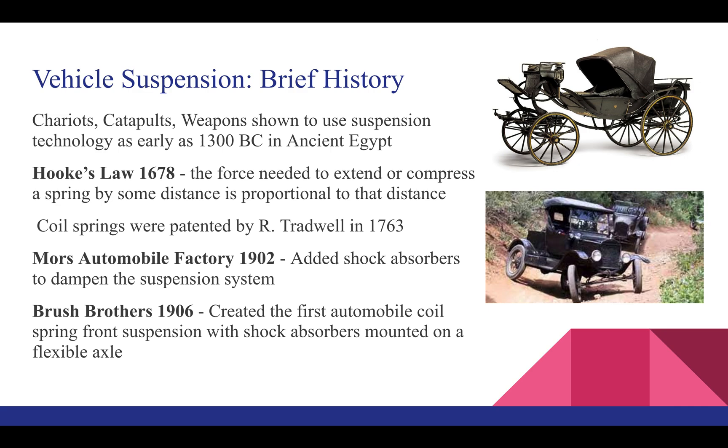We have a few other examples such as the Mors Automobile Factory in 1902. They added the first shock absorber in the suspension system. Basically what this does is it provides damping to the system through the use of a viscous fluid or a piston cylinder to help make rough patches die out when you're hitting a bump. The Brush Brothers in 1906 created the first coil spring front suspension with the shock absorbers mounted. They basically took the two concepts, put them together, and this is really where we've developed since then.